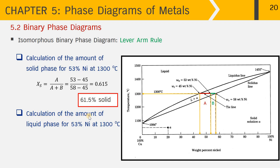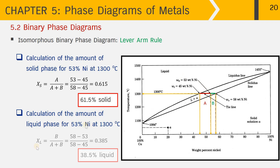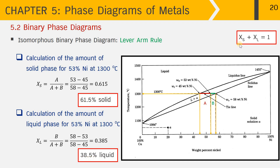Now for the amount of liquid phase at 53% nickel and 1300°C: X_L = (W_S − W₀) / (W_S − W_L) = (58 − 53) / (58 − 45) = 5/13 ≈ 0.385, or 38.5% liquid. As a check, X_S + X_L = 0.615 + 0.385 = 1.000. This demonstrates using the lever rule to calculate the amounts of phases in the two-phase region given a composition and temperature.